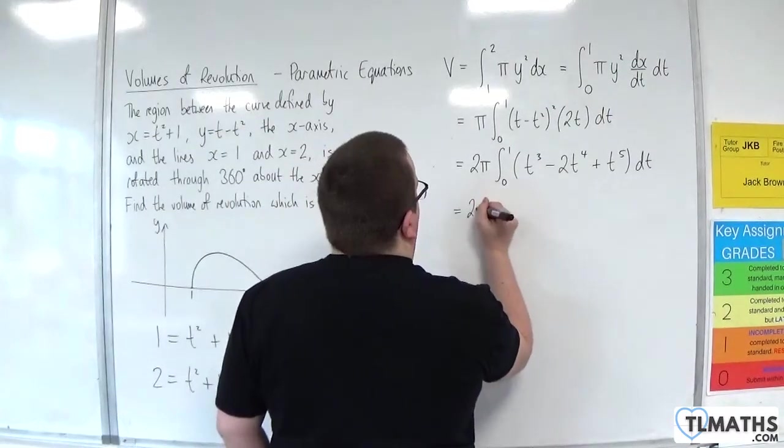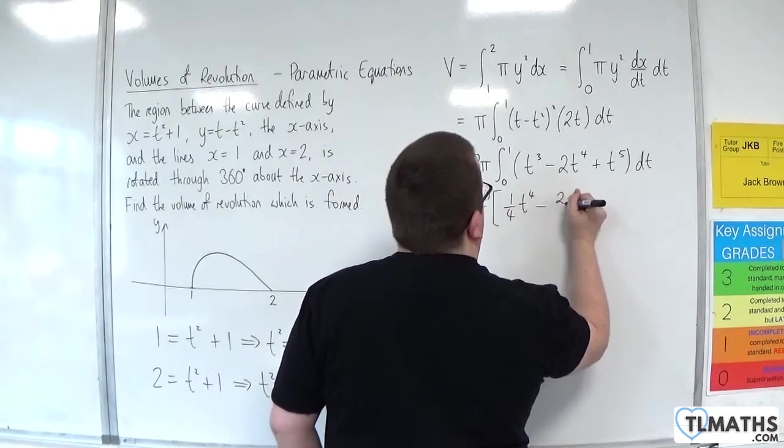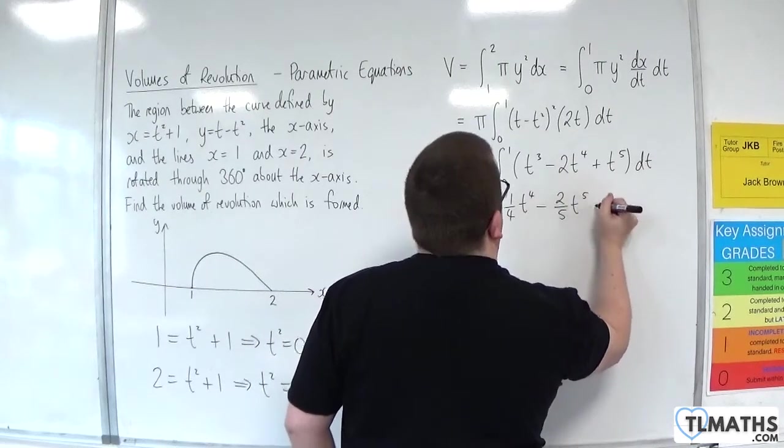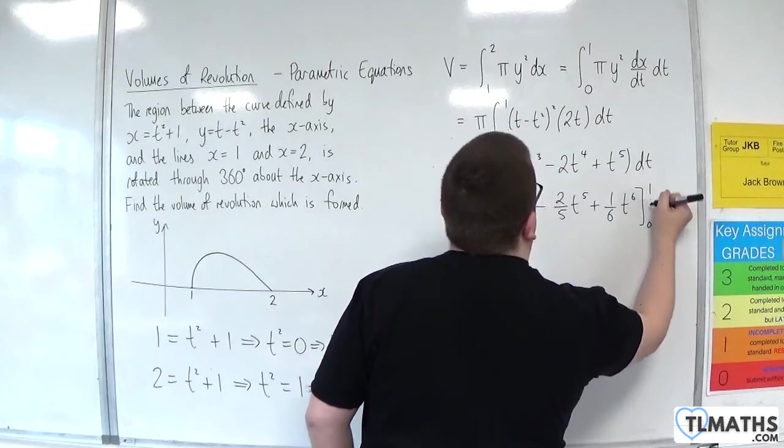So we have 2 pi. Now integrate. So 1 quarter t to the 4, take away 2 fifths t to the 5, plus 1 sixth t to the 6, evaluated between 0 and 1.